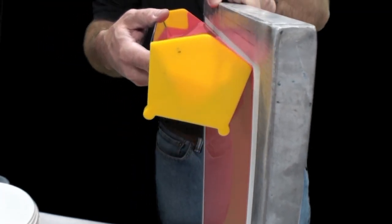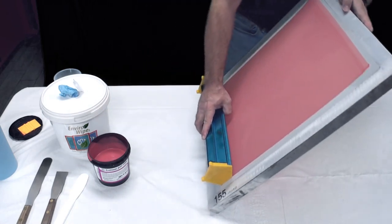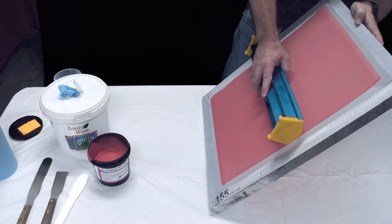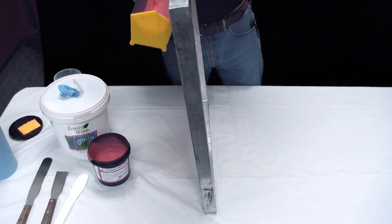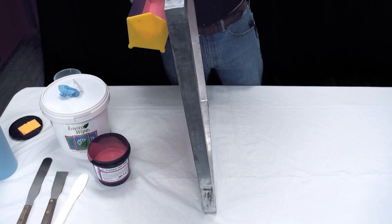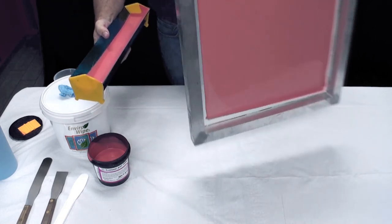We're going to do a two and two coating so we'll come back. We'll apply and we'll scrape. Again lean it back let the emulsion go back into the tray and scrape it. Then I'll flip it over.